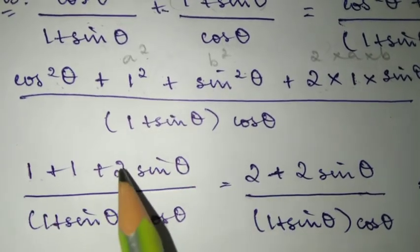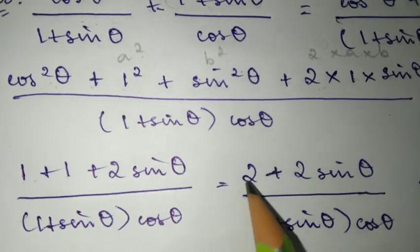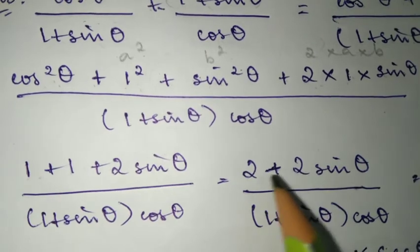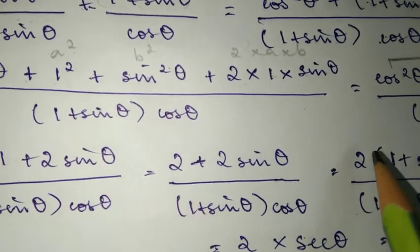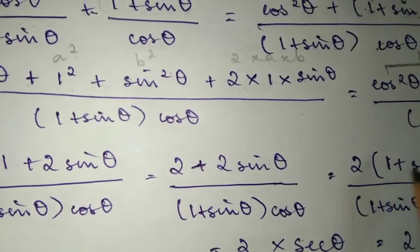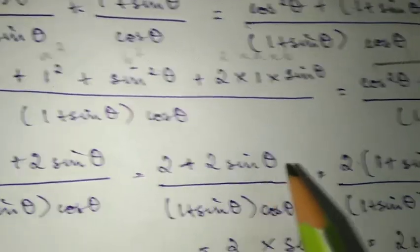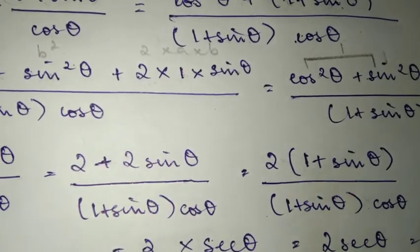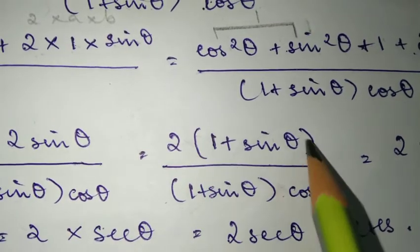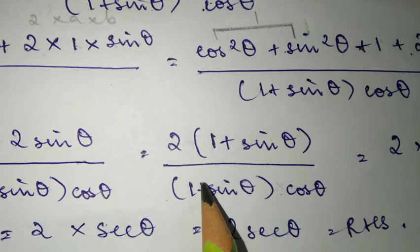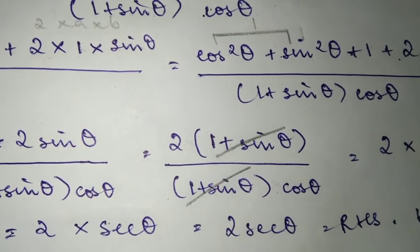Now 1 plus 1 is 2. So we have 2 plus 2 sin theta. We can factor out the 2 by opening brackets: 2 times (1 plus sin theta). Now in the brackets we have 1 plus sin theta on top, and we also have 1 plus sin theta in the denominator, so they cancel.